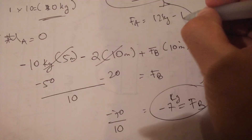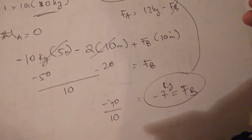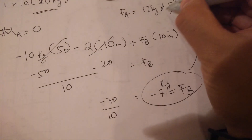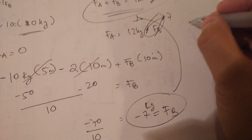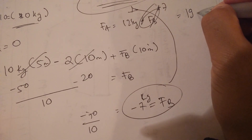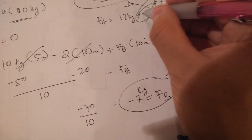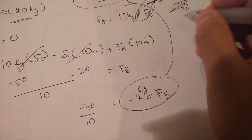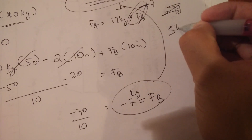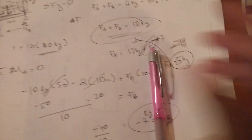Substituting back: FA equals 12 kilograms minus FB. Since FB is negative, you add it, so FA equals 12 minus 7, which gives FA equals 5 kilograms. That is your reaction at A.